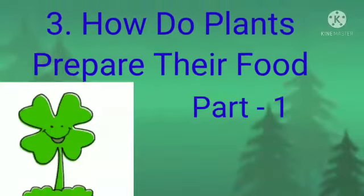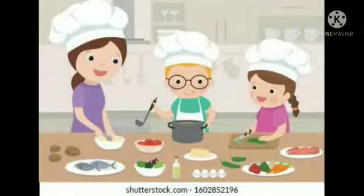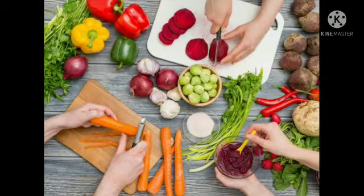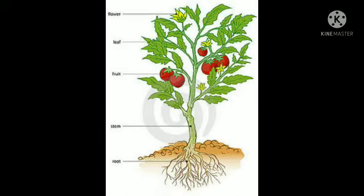Chapter 3: How do plants prepare their food? Hello children. We like different types of food, and for preparing that food we need many ingredients. Like the same, plants, which are the primary producers of food, need some ingredients to produce food. In this chapter, we are going to discuss about the ingredients which plants need to produce food.